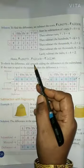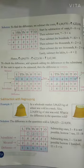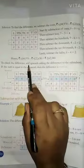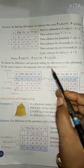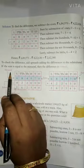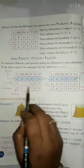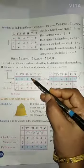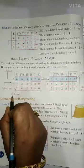To check the difference, add upwards. अब हमें subtraction तो हमने कर लिया। अगर हमें उसका verification करना है तो हम क्या करेंगे? Add upward — adding the difference to the subtrahend. If the sum is equal to the minuend, then the difference is correct. जो नंबर ऊपर में लिखा होता है वो minuend कहलाता है। जो नीचे लिखा होता है वो subtrahend होता है। जब हम minuend में से subtrahend को minus करते हैं तब जो हमें मिलता है उसे हम difference कहते हैं।